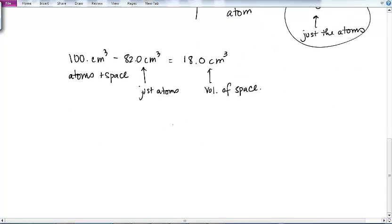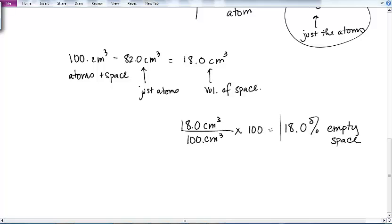And if I am interested in finding the percent that is empty space, then all I need to do is I take the volume of the space, 18 cubic centimeters, divided by the volume of the atoms in the space, which was 100 cubic centimeters, times 100 gives you 18% empty space. And that's the end of the problem.